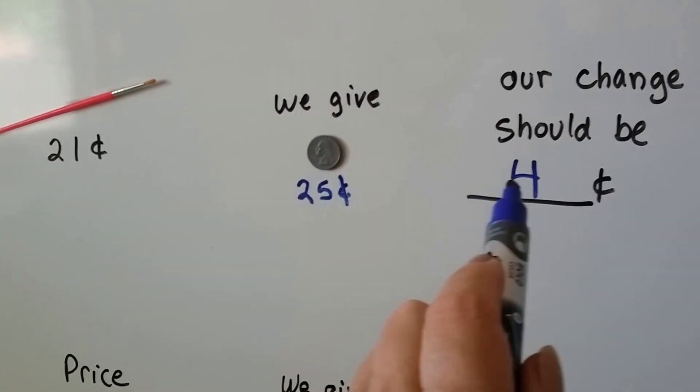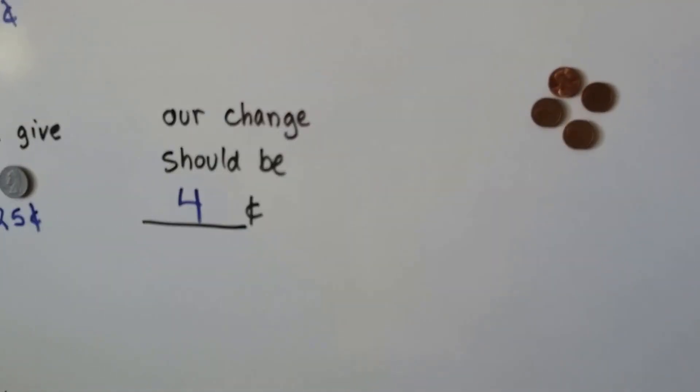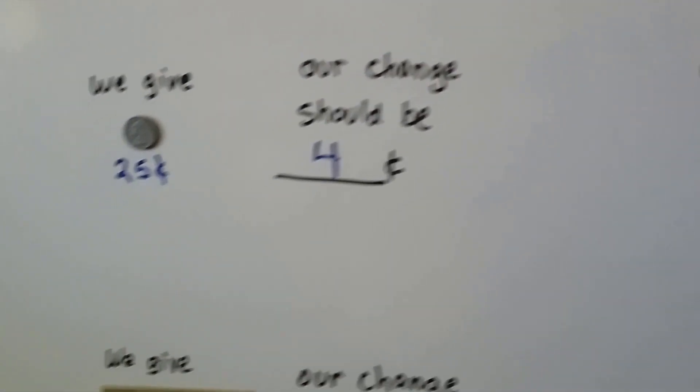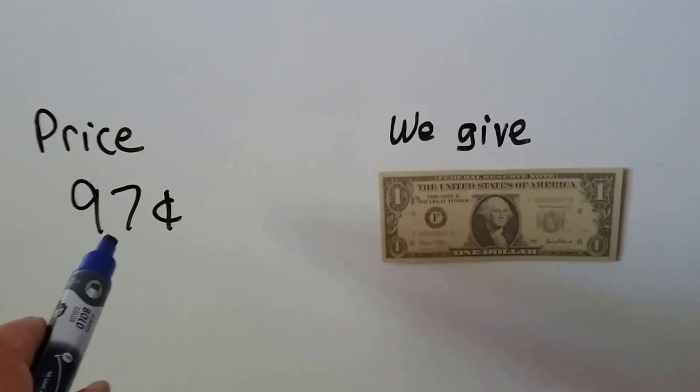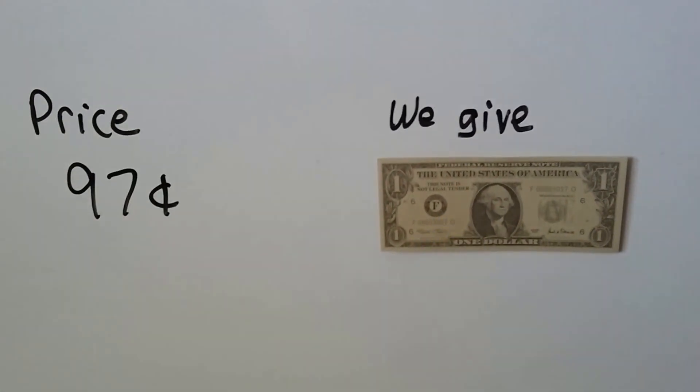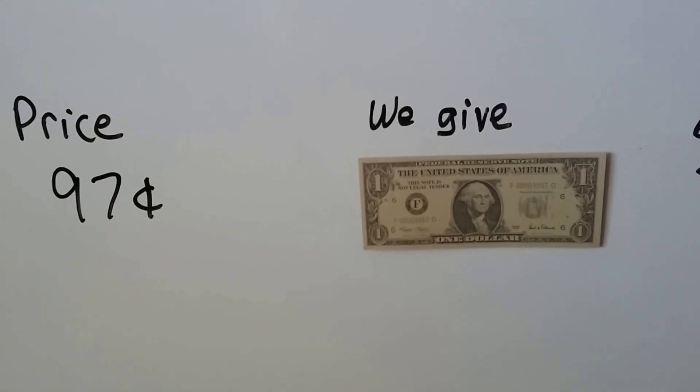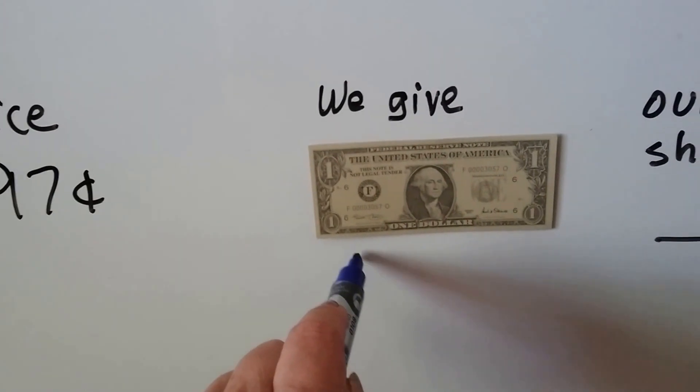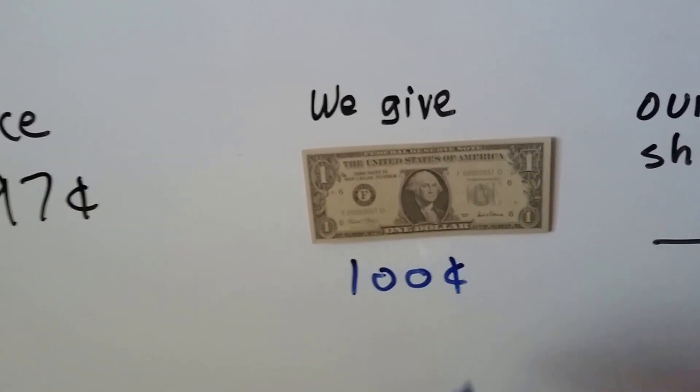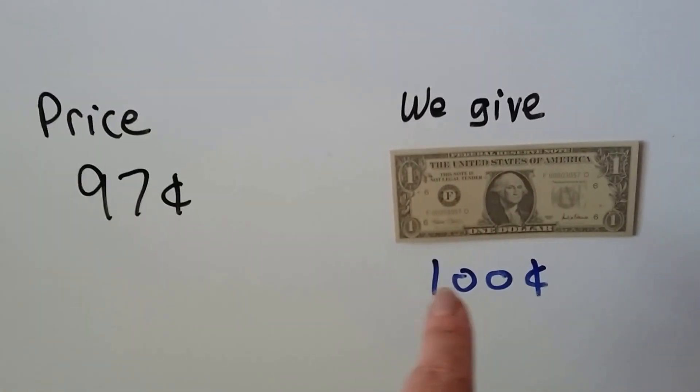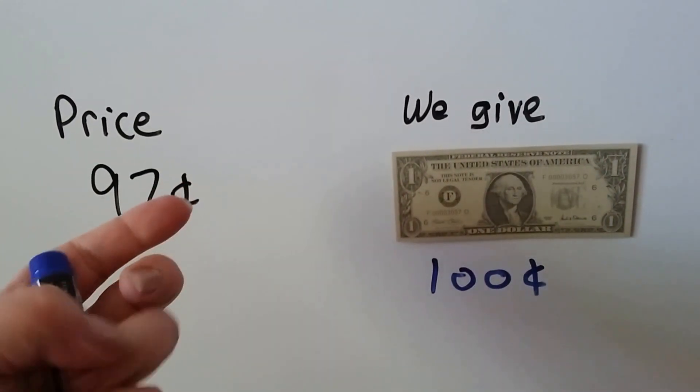What if we bought something that was 97 cents and we give the cashier a dollar bill? How much change should we get back? Well, remember the dollar bill is 100 cents, isn't it? We start with 97 and count up to 100: 97, 98, 99, 100. Three. So we would get three cents back, we'd get three pennies, wouldn't we?